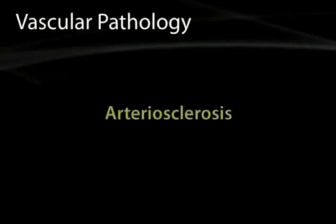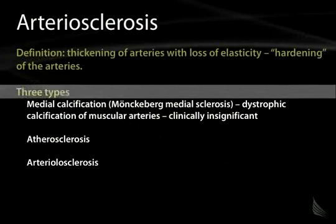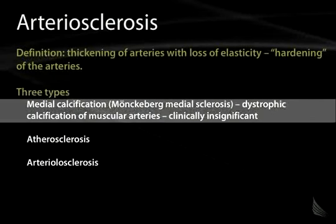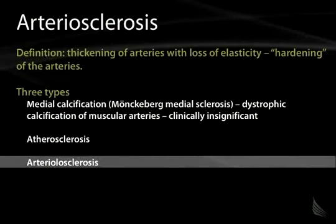Now we'll begin a discussion of arteriosclerosis. By definition, arteriosclerosis is thickening of the arteries with loss of elasticity, or hardening of the arteries, so to speak. There are three types: medial calcification, atherosclerosis, and arteriolosclerosis.